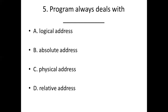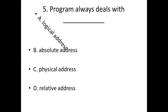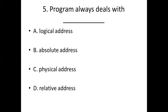Fifth bit: Option B: Absolute addresses. Option C: Physical addresses. Option D: Relative addresses. Answer: Option C — Logical address.